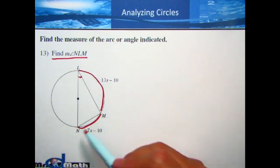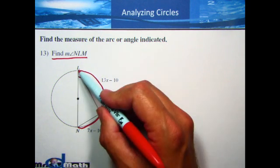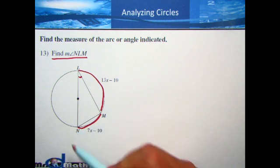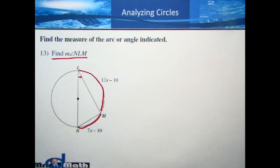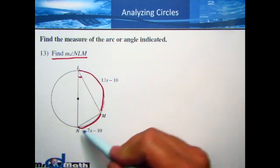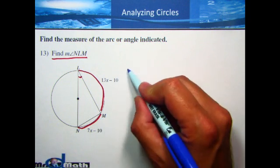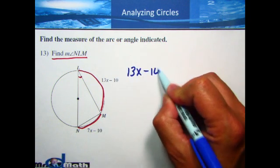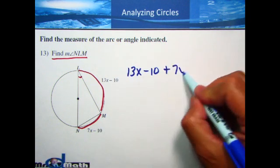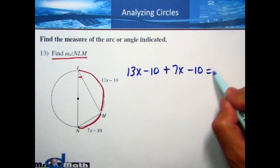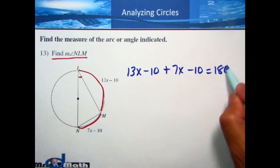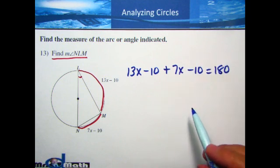If I take those two arcs and put them together, the arc that gets created is actually a semicircle. What do we know about semicircles and the arcs of semicircles? A semicircle is going to be 180 degrees, so this arc from L to M plus the arc from N to M is going to equal 180 degrees. What we're going to be able to do is find X by adding them together — they add up to 180 degrees.